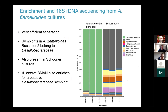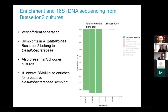This analysis proved very efficient at separating co-cultured organisms from the amoeba cells. We were able to see that the likely enriched symbionts seem to belong to the Desulfobacteria. This also turned out to be present in another isolate called Schooner, and in another species we also detected enrichment for Desulfobacteria symbionts.